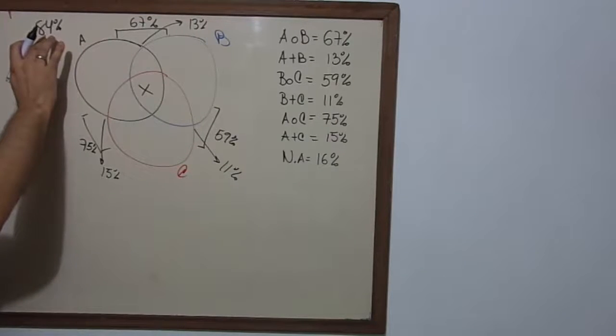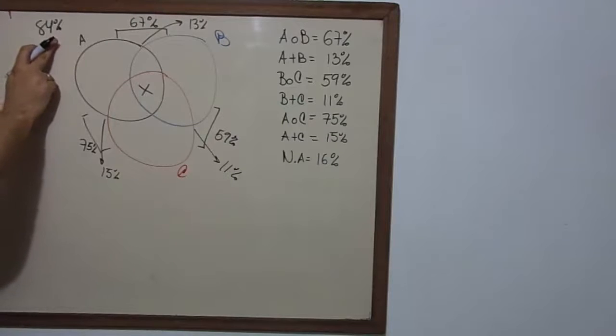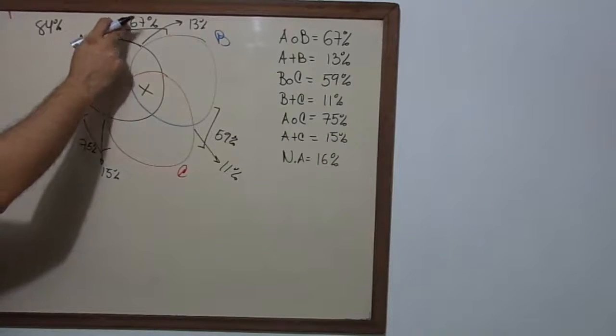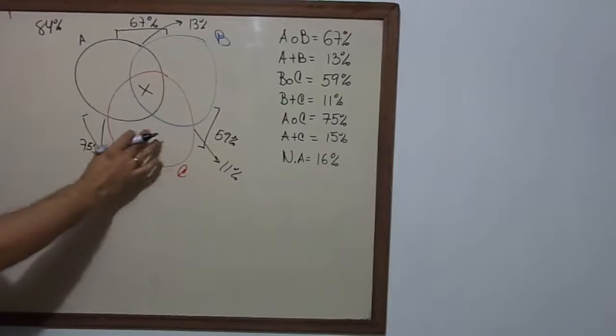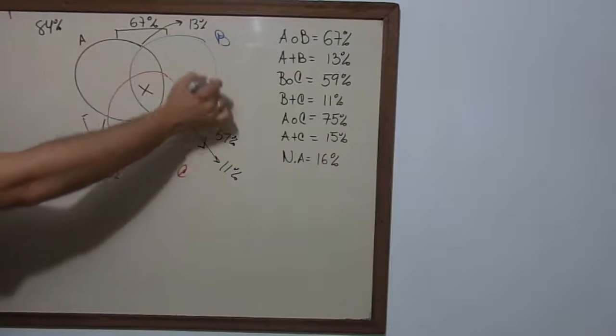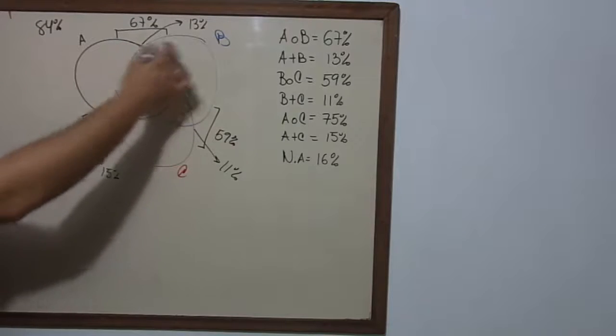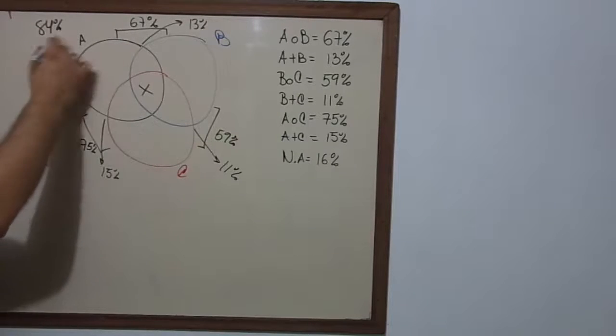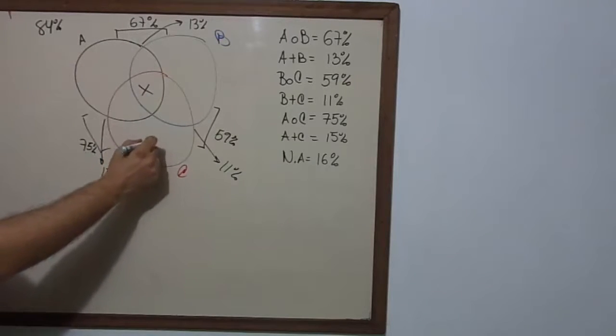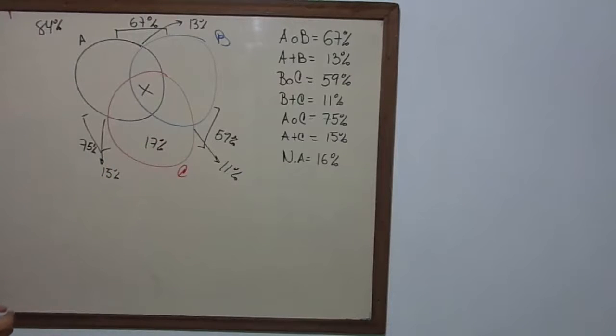If we take 84% and we take 67%, we get only this space, right? Because 67% is both circles, the black one and the blue one. So what you get here is 17%.